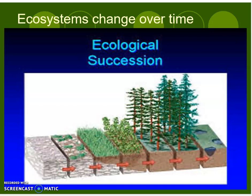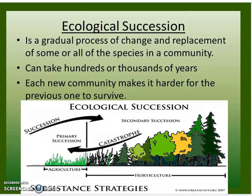Ecosystems change over time. One way ecosystems change over time is through a process called ecological succession. Ecological succession is a gradual process of change and replacement of some or all of the species in a community. It can take hundreds or thousands of years. Each new community makes it harder for the previous one to survive.